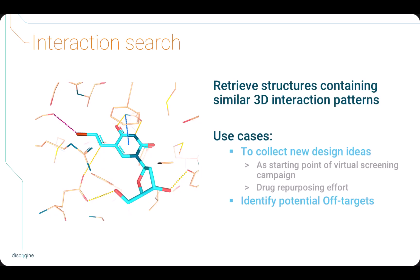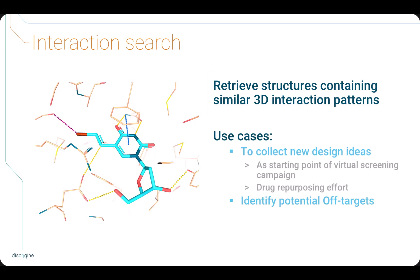In this video tutorial, we will use the 3Decision Interaction Search, which finds structures with similar protein-ligand interaction patterns from a determined query. This feature can be used for several use cases. In this video, we will show an example of drug repurposing.